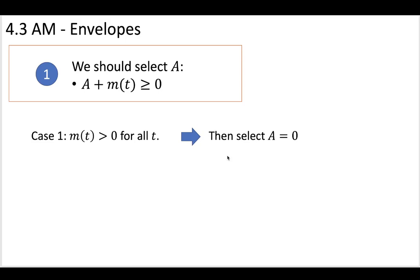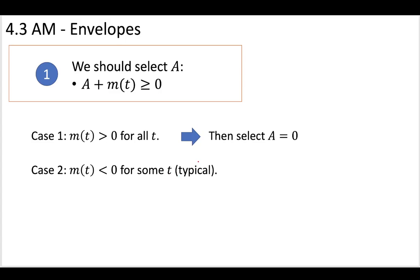Now let's consider a more normal case where sometimes your message goes below zero — for example, a cosine or some oscillating wave that sometimes goes negative. This is the typical situation. Within this case, we have two sub-cases of what the message could look like.